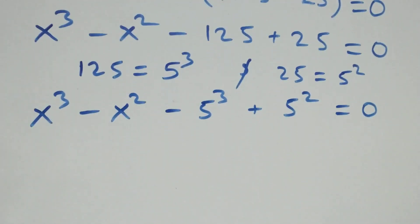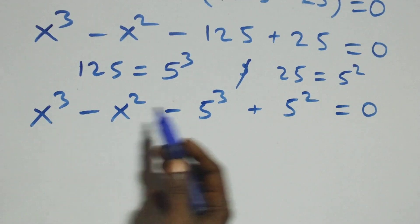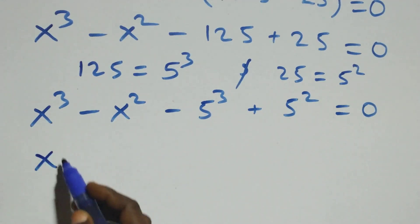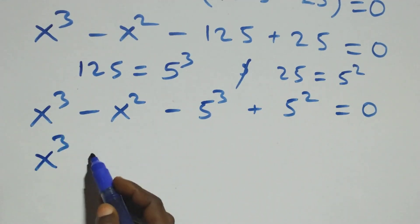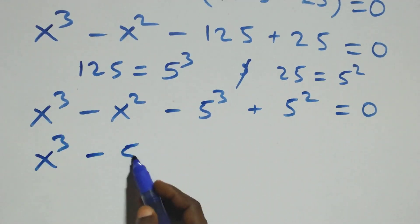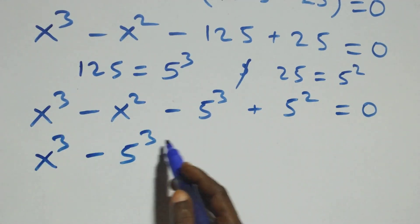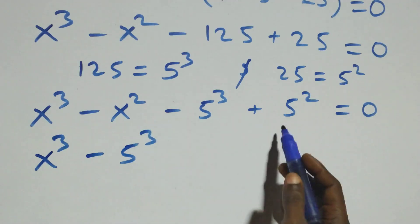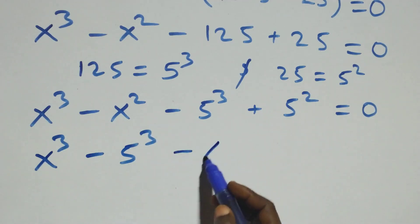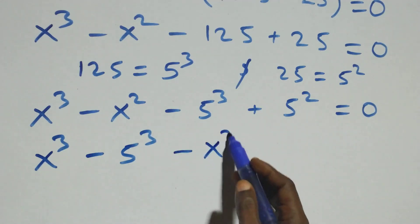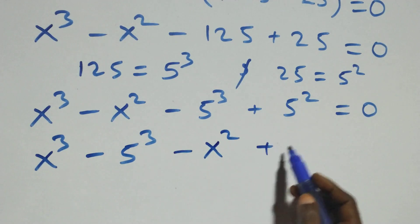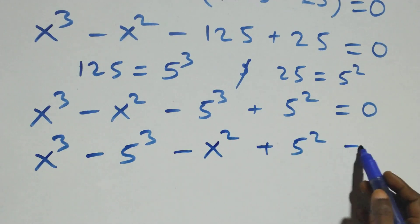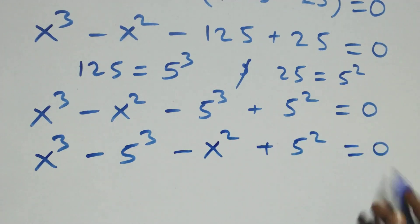Next step: we bring the powers of 3 together, giving us x cube minus 5 cube, and also bring the powers of 2 together, giving us minus x square plus 5 square, equals to 0.